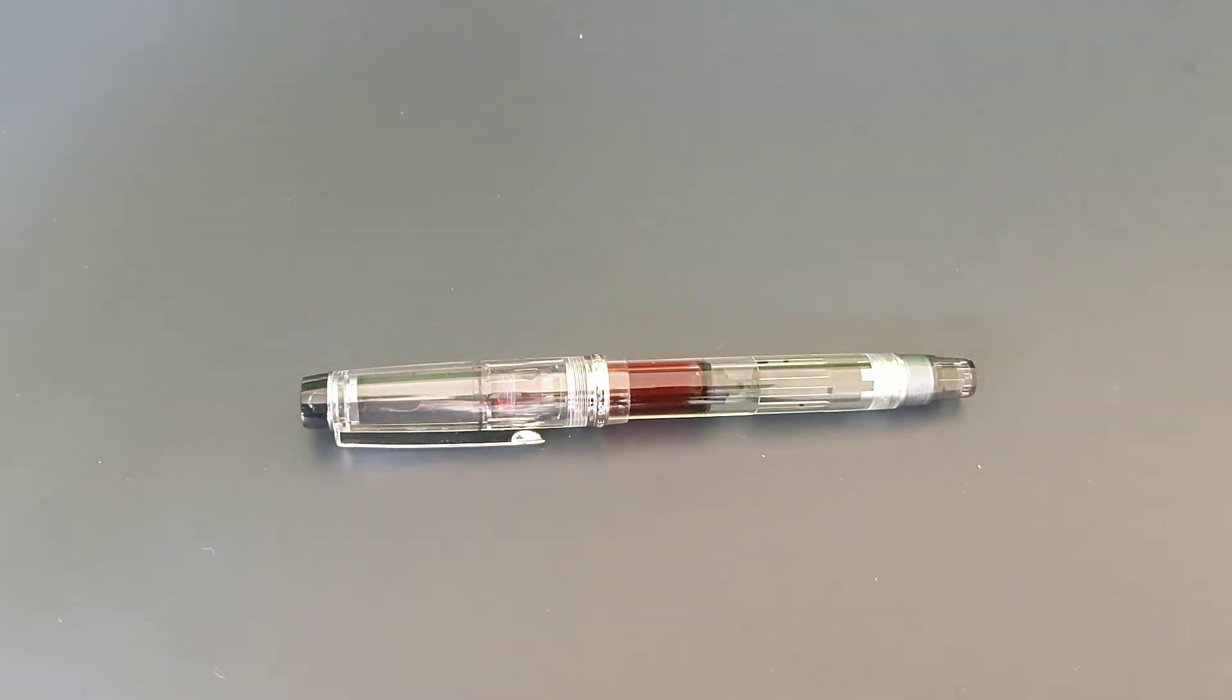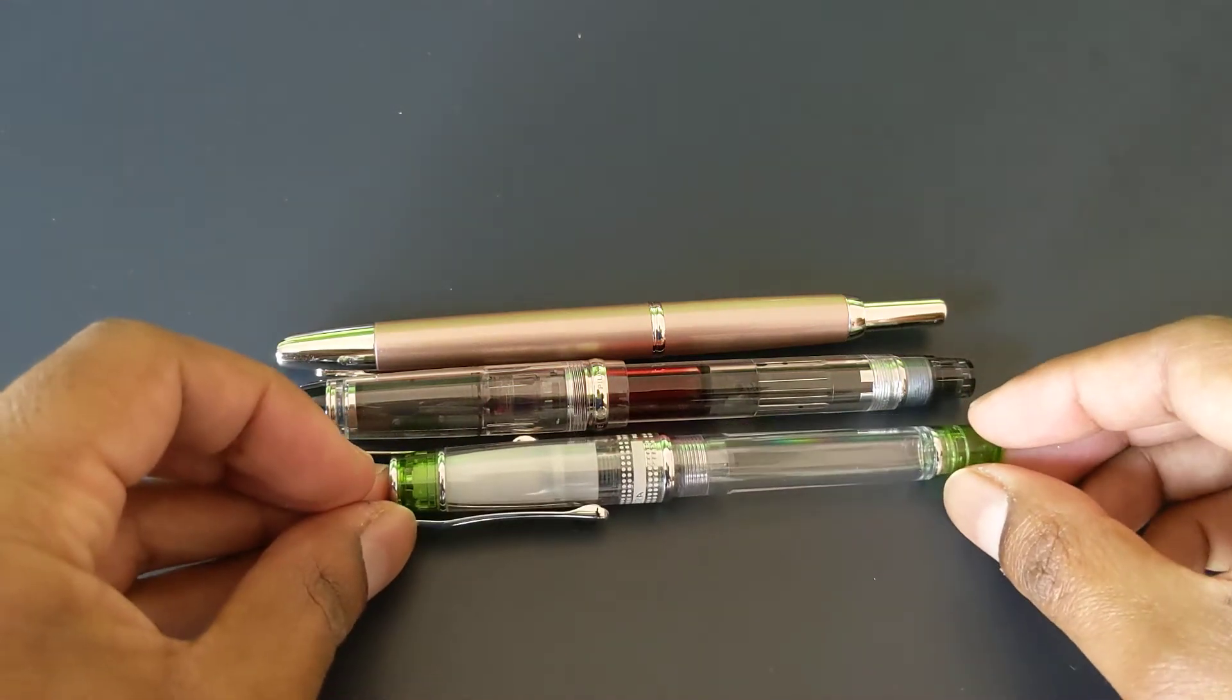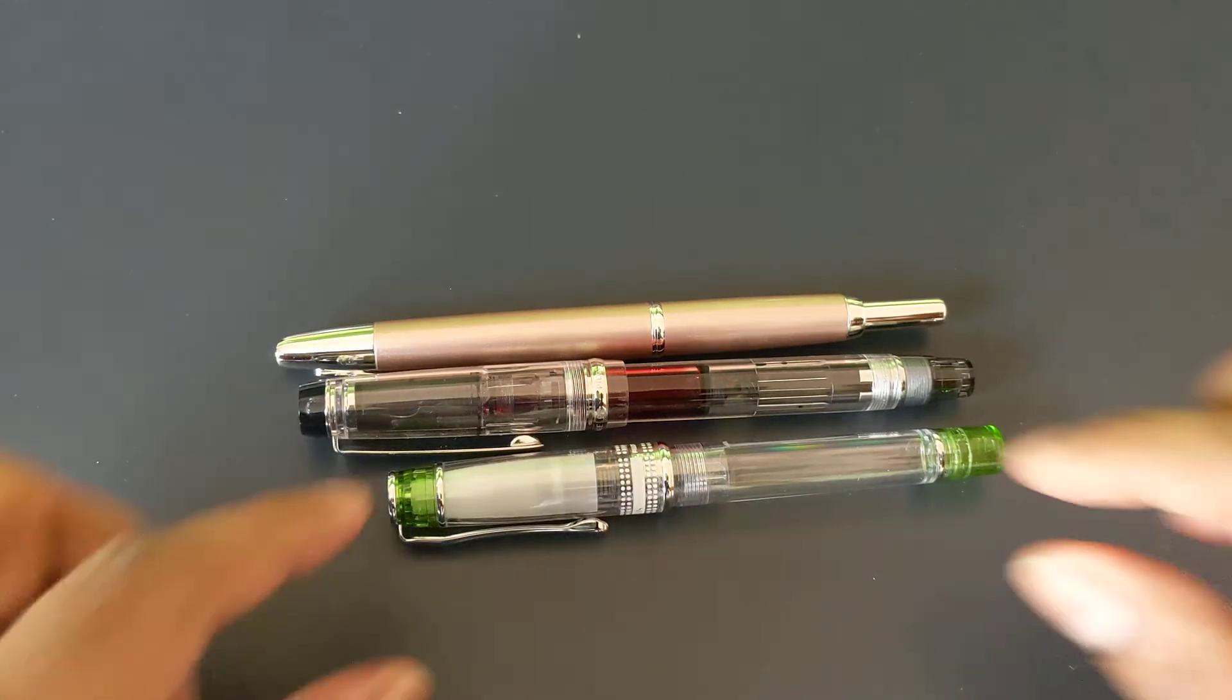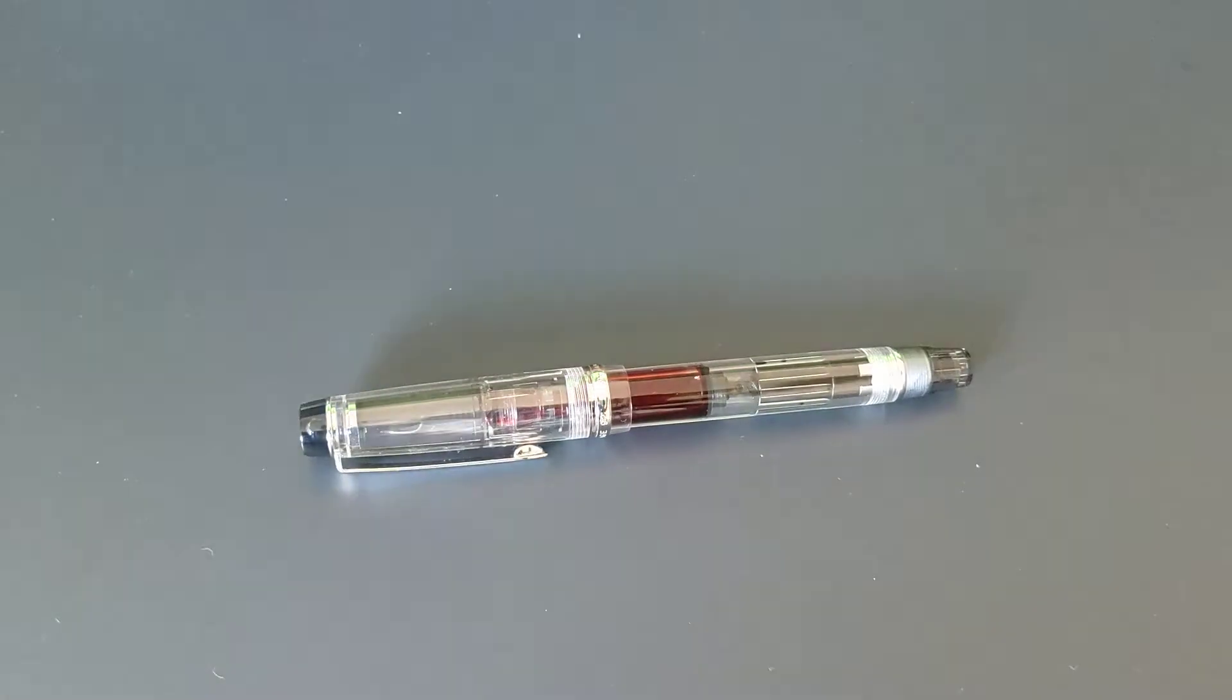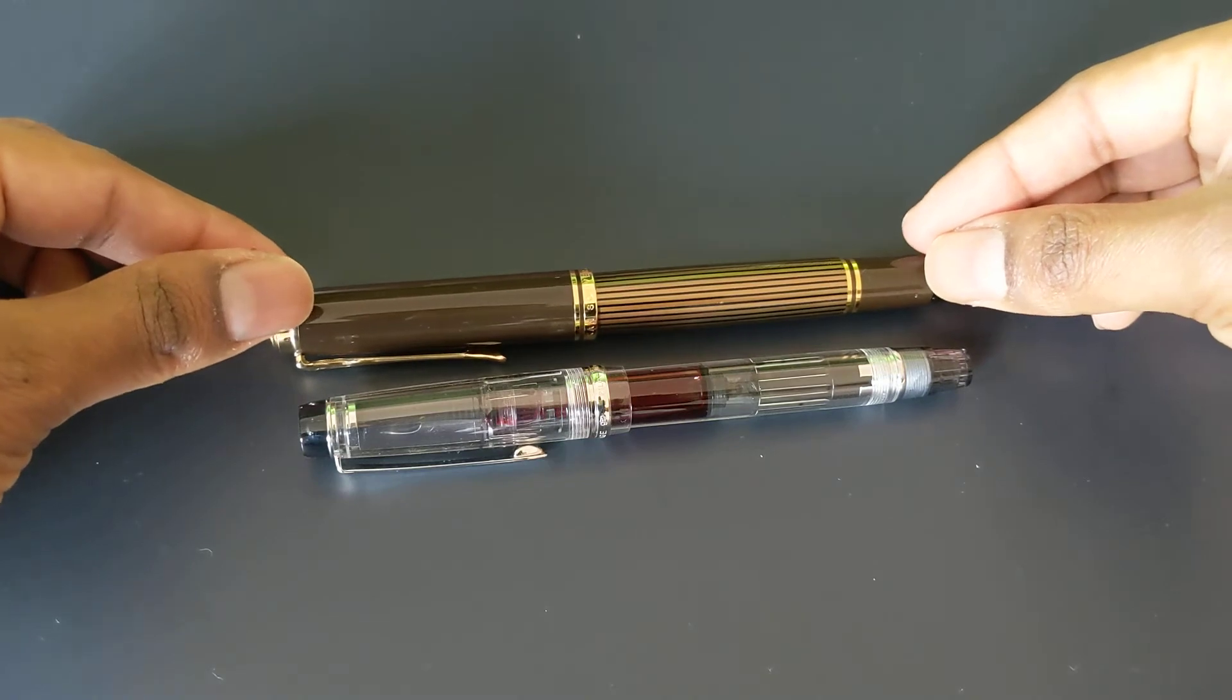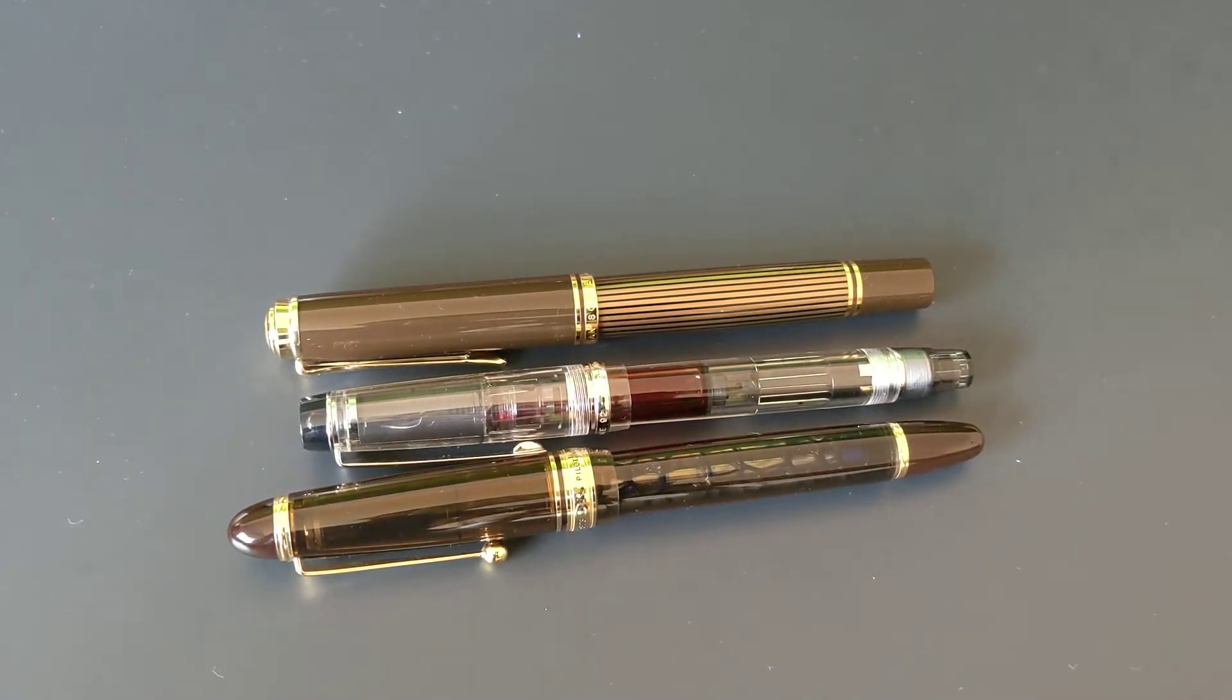Just to compare it to some other pens, here's a Pilot Vanishing Point, which is definitely longer. Compared to a Pilot Prera, which is a similar looking pen but smaller and a cartridge converter with a snap cap. And then here's a Pelican M800 and a Pilot Custom 823, both are larger than the Custom Heritage 92.